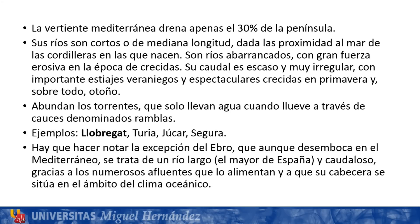We finish with the rivers of the Mediterranean watershed, which drain barely 30% of the peninsula. Their rivers are short or medium in length, given the proximity to the sea of the mountain ranges in which they rise. They are deeply incised rivers with great erosive force during flood season. Their flow is scarce and very irregular, with important summer low-water periods and spectacular floods in spring and especially in autumn. Torrents abound, carrying water only when it rains through channels called ramblas. The example we give is the Llobregat, or also the Turia, Júcar, and Segura.